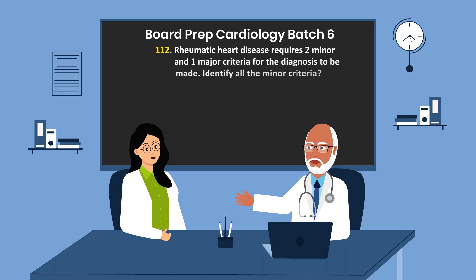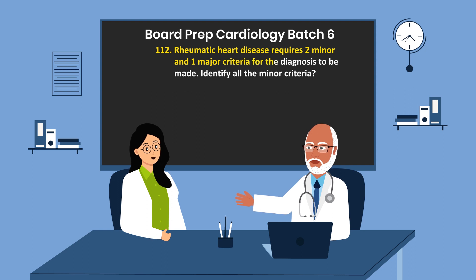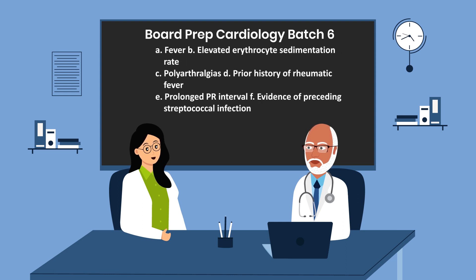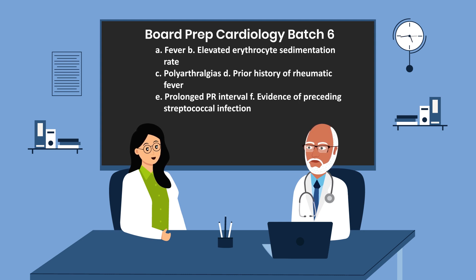Question 112. Rheumatic heart disease requires two minor and one major criteria for the diagnosis to be made. Identify all the minor criteria. 1. Fever. 2. Elevated erythrocyte sedimentation rate. 3. Polyarthralgia. 4. Prior history of rheumatic fever. 5. Prolonged PR interval. 6. Evidence of preceding streptococcal infection.